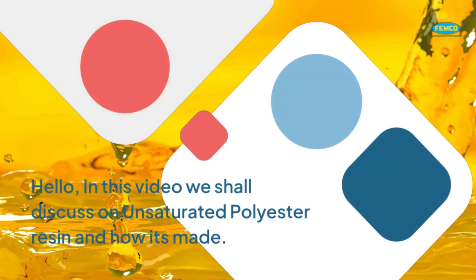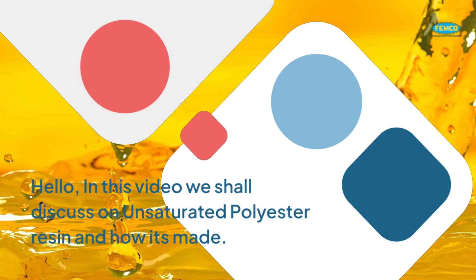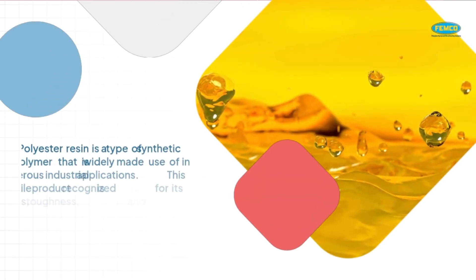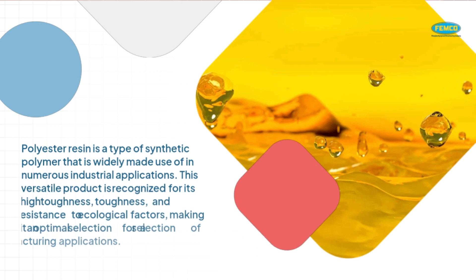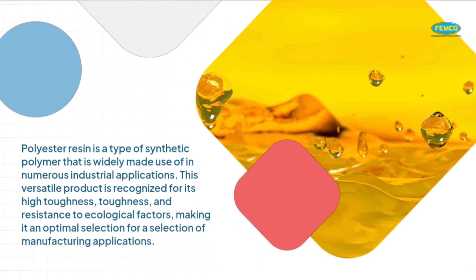Hello, in this video we shall discuss unsaturated polyester resin and how it's made. Polyester resin is a type of synthetic polymer that is widely made use of in numerous industrial applications.